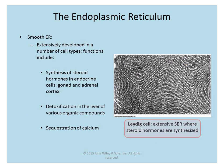The rough ER is important for protein synthesis and also for modifications such as glycosylation and disulfide bond formation. The smooth ER, on the other hand, is important for lipid production. Cells important for steroid production, such as endocrine cells in the gonad or adrenal cortex, have a high amount of smooth ER. The liver also has a high amount of smooth ER because it is involved in detoxification of organic compounds such as ethanol and barbiturates. The smooth ER is also important for sequestration of calcium.